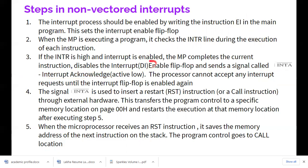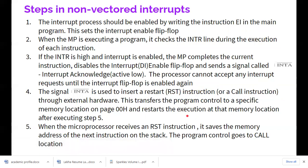When INTR is high and the interrupt is enabled by the EI instruction, the microprocessor completes the current instruction, disables the interrupt (DI) so other devices cannot disturb it, and sends a signal called INTA (interrupt acknowledge) — which is a low signal. The microprocessor cannot accept any other interrupt until the interrupt flip-flop is enabled again. The INTA signal is used to insert a restart (RST) instruction or a CALL instruction through external hardware, so the processor can jump to the particular service routine.